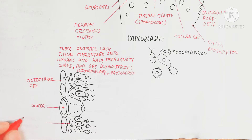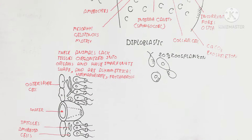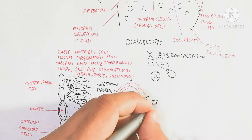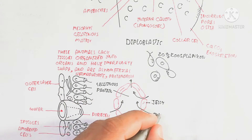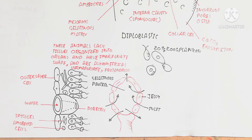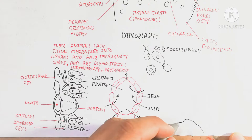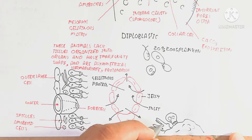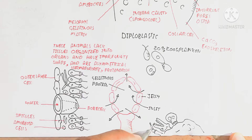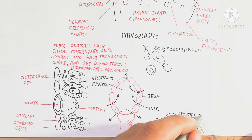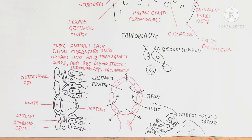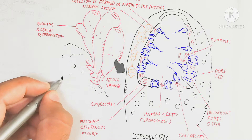Protandry means the male sex organ develops before the female. In the structural diagram, the outer layer cell shows water movement from the pore cell. The spicules and amoeboid cells are present. Incoming water moves through the jelly-like structure at the inlet. Dead organic matter found in the substratum, such as in the sea or ocean, is used as food, mixing with water for nutrition.